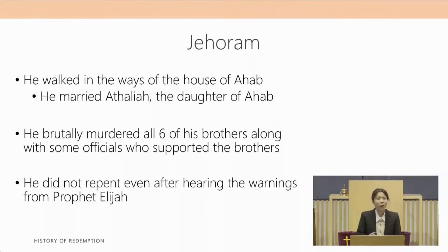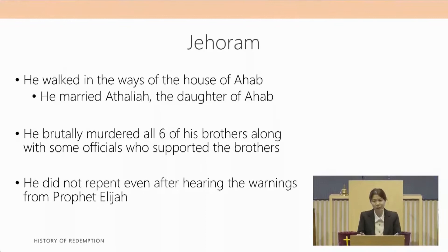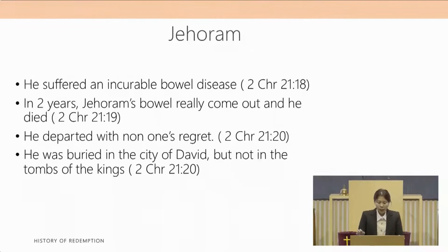We see this also in King Solomon and King Rehoboam, where both fell into idolatry because of their foreign wives. Jehoram and his wife Athaliah committed idolatry. He had six brothers, all of whom opposed the idolatry. When he acceded to the throne, he brutally murdered all six brothers along with officers who supported them. Prophet Elijah warned him of his wicked deeds and prophesied about his end if he did not repent, but sadly he still did not repent.